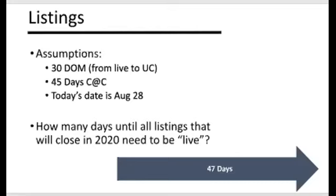We still need to give 45 days to go from under contract to close. Today's date is August 28th. So with those assumptions, how many days until all your listings that will close this year need to go live? We have 47 days — because listings need to go live, sit on market for 30 days to go under contract, and then 45 days to close. How many listings do you need to go live in the next 47 days? Write that down.